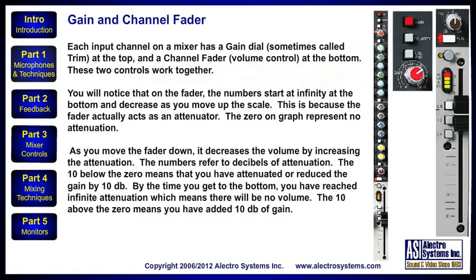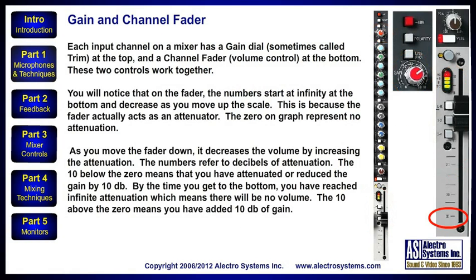Each input channel on a mixer has a gain dial, sometimes called trim, at the top, and a channel fader or volume control at the bottom. These two controls work together. You will notice that on the fader, the numbers start at infinity at the bottom and decrease as you move up the scale. This is because the fader actually acts as an attenuator.